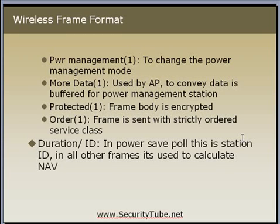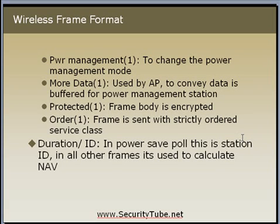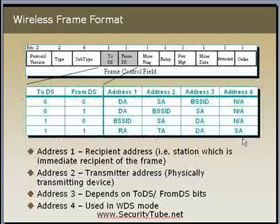Next comes the Duration or ID field. In power-save poll frames, this field is interpreted as a Station ID field. In all other frames, it is interpreted as the Duration field and is used to calculate the NAV vector. There is a separate video on the importance of the NAV vector and the Duration field — you are requested to watch that video.